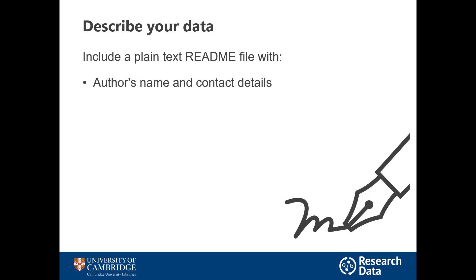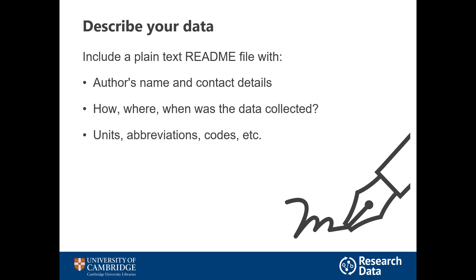So start with the author's name and contact details, yours and maybe your supervisor's. Try to make sure these will be contact details that last in time — so it might not be a good idea to use your Cambridge email address if your contract is coming to an end in the next few years. You also need all the context for the data: how, where, when was it collected? What was the purpose of the project? You might also want to include something about limitations or assumptions that underlie that data, anything that you think would be important for people to know when they look at it.